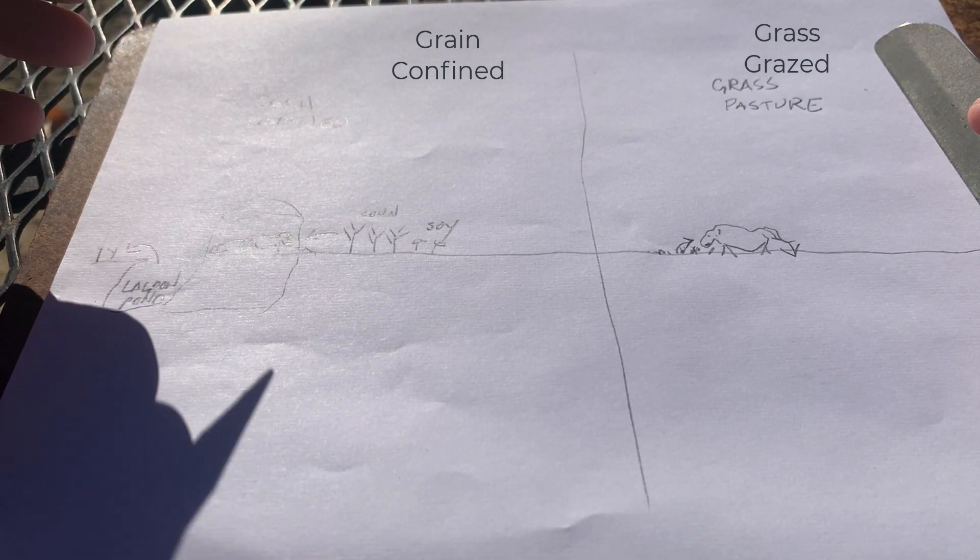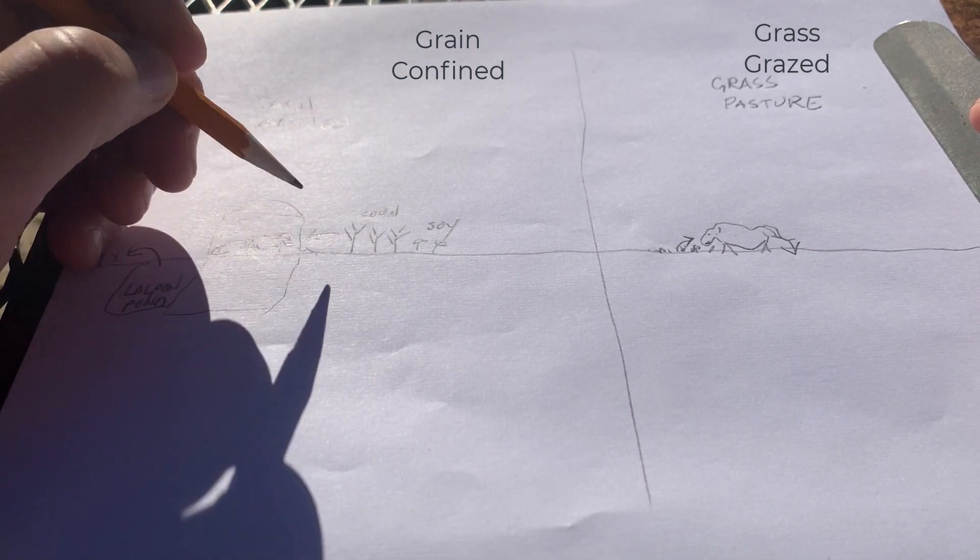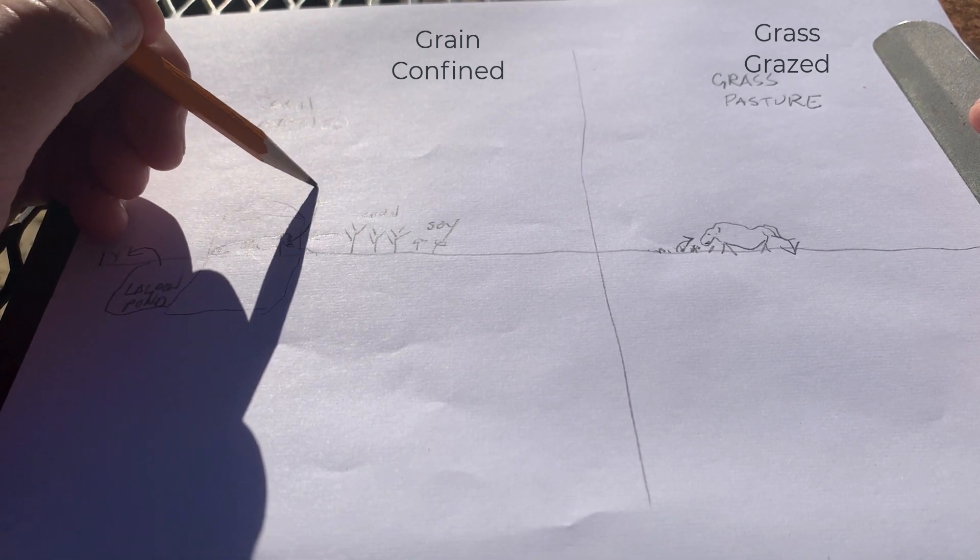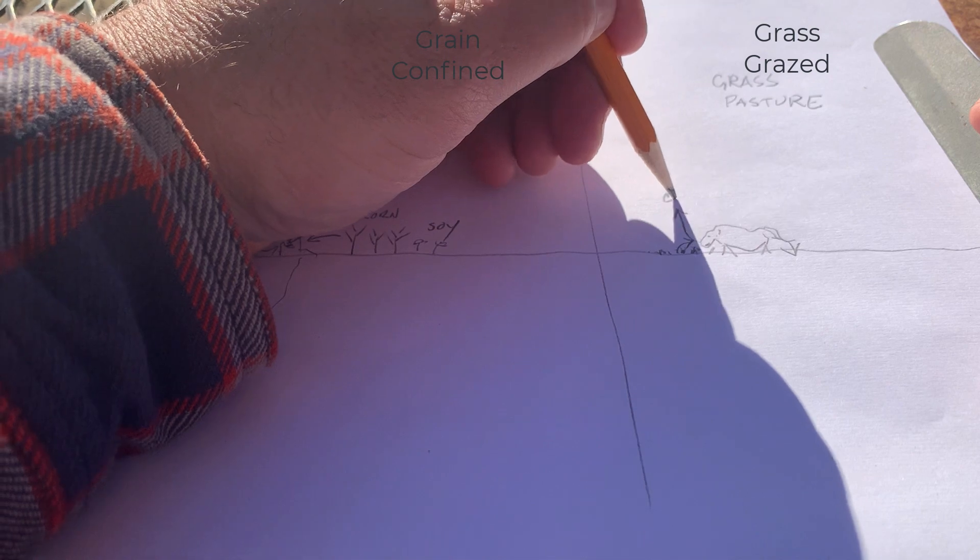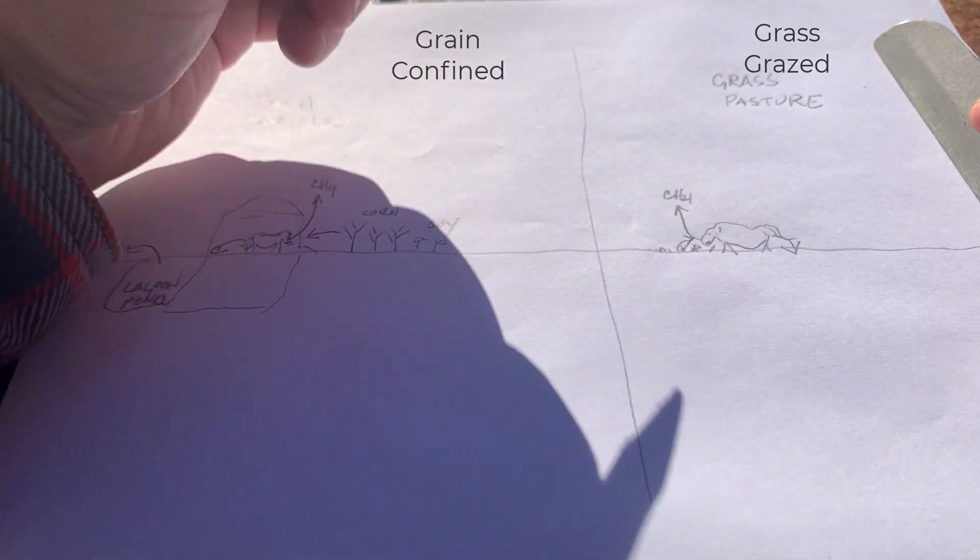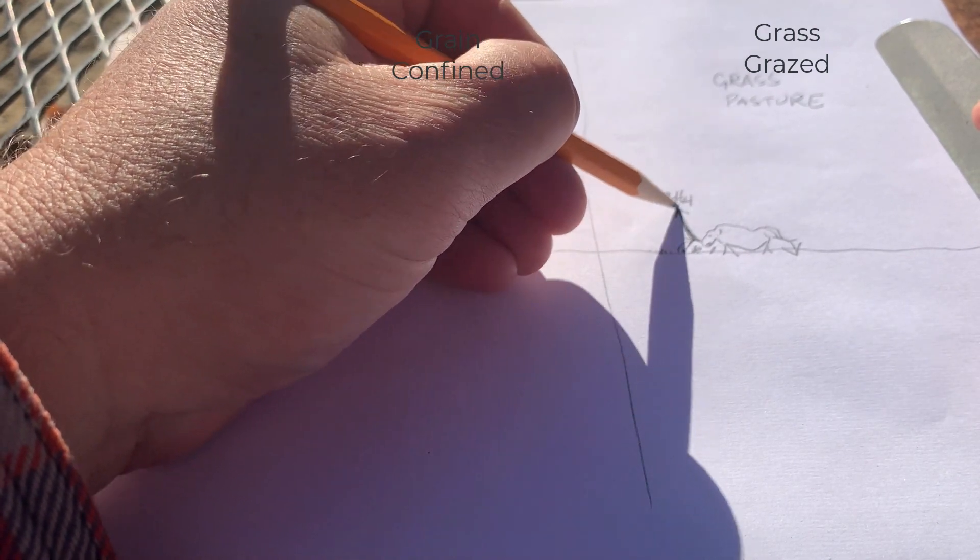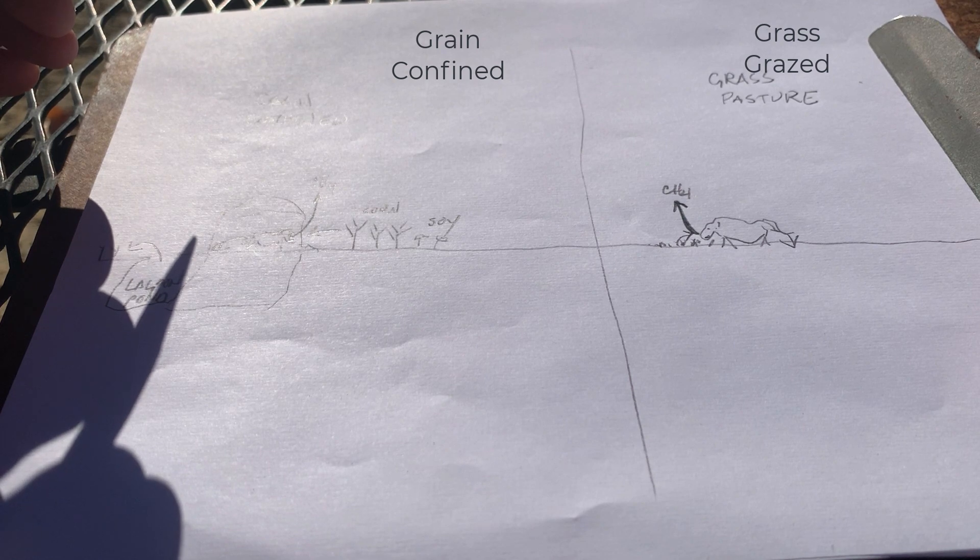We've talked a little bit in this class about how the animals themselves belch a lot, especially cows, and as a result they emit methane. In both cases these animals emit methane. It's pretty clear that the more grass and forage the animal consumes as a proportion of their diet, the more that comes off as methane. So I'll make that arrow a little bit fatter here.